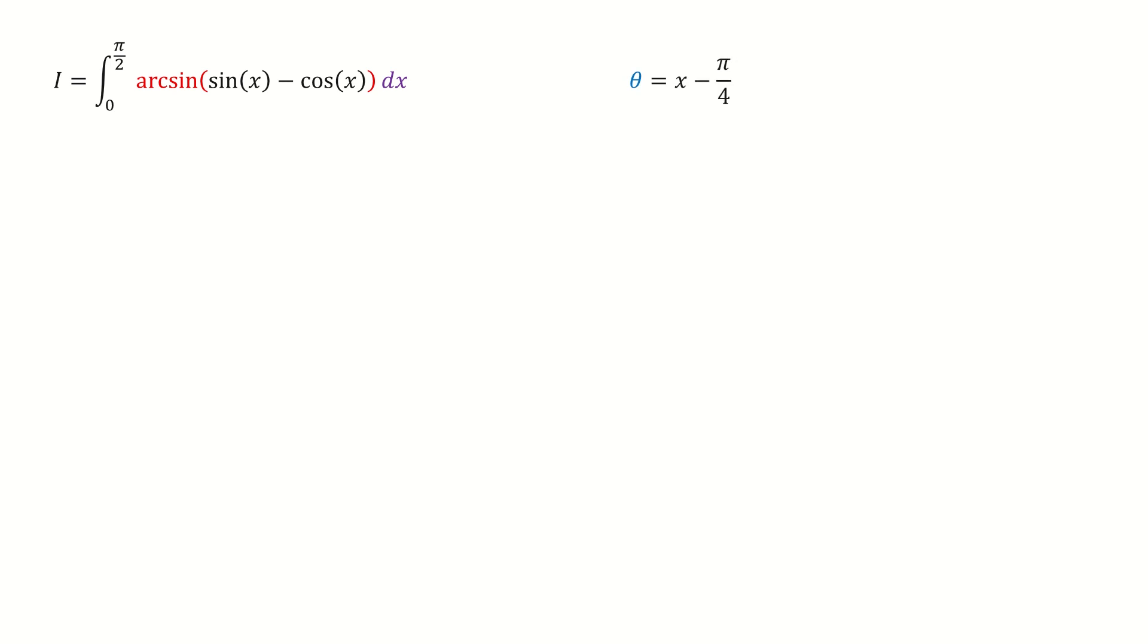First, we define theta in this way. When x goes from 0 to half pi, theta goes from minus pi over 4 to pi over 4.